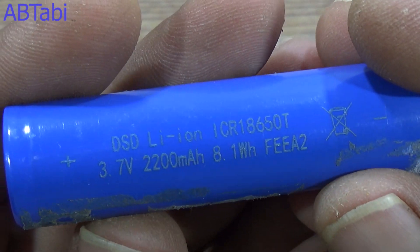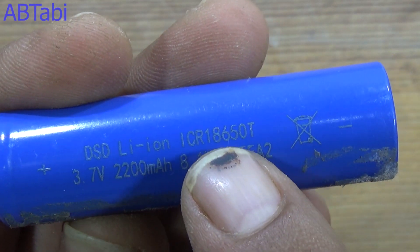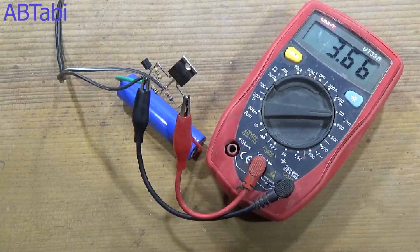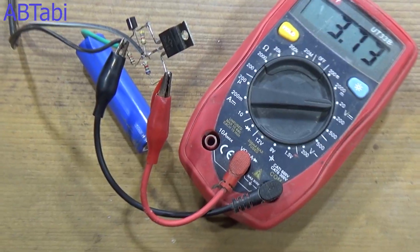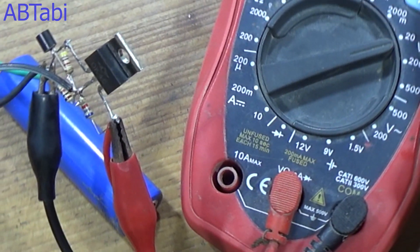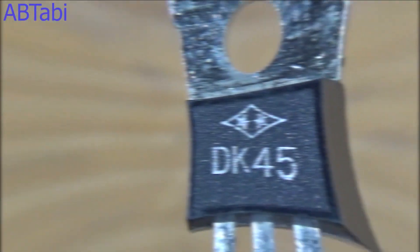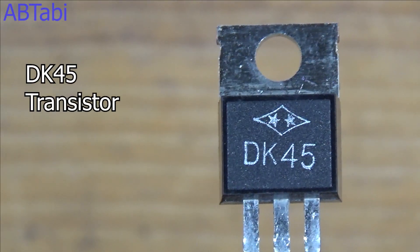Hi friends, welcome to our channel. Today we make an 18650 3.7 volt battery charger circuit—super simple, easy, and effective electronic circuit. We use components: DK45 American transistor and BC547 transistor.